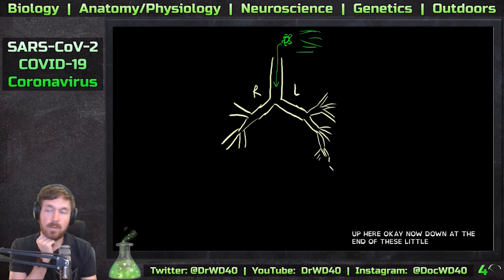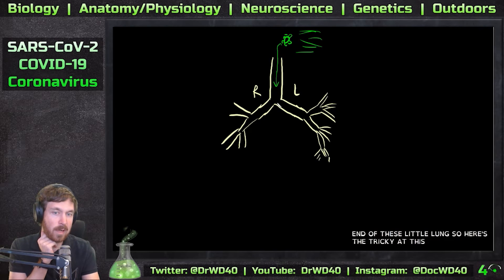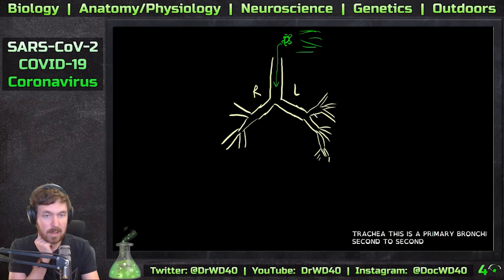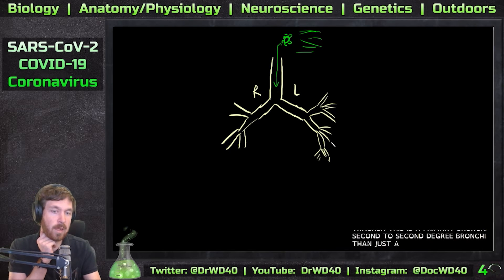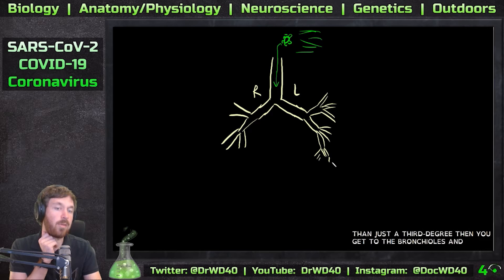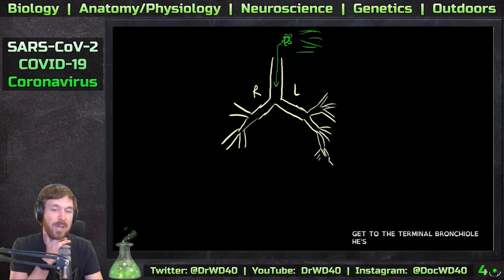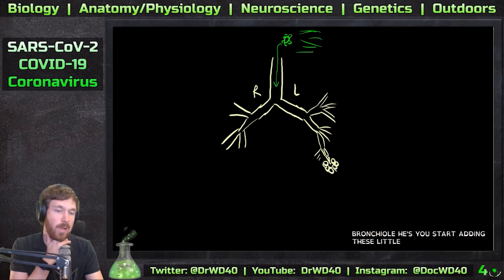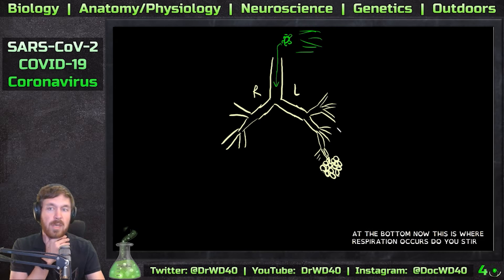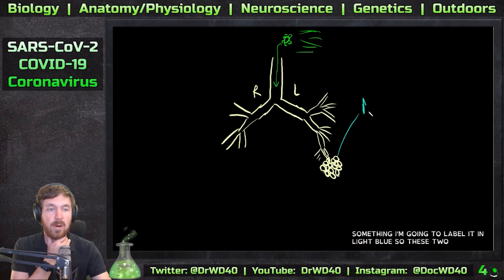Down at the end of these little lungs: here's the trachea, this is the carina of the trachea, this is a primary bronchi, second degree bronchi, then there's a third degree, then you get to the bronchioles, then the terminal bronchioles. When you get to the terminal bronchioles you start adding these little ball-like structures at the bottom - this is where respiration occurs.